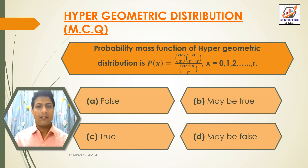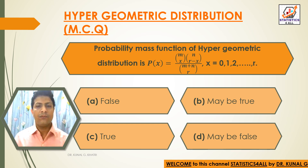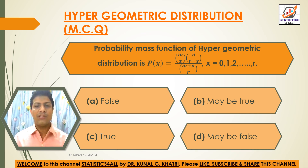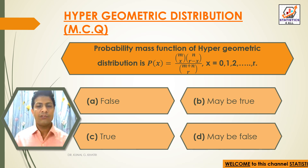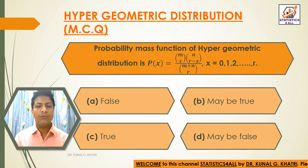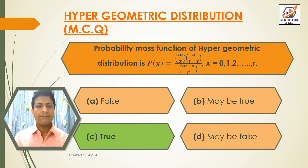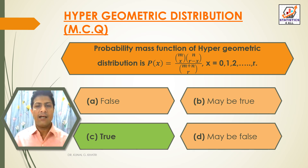Next question: The probability mass function of Hypergeometric distribution is P(x) = (mCx × nCr−x) / (m+nCr), where x = 0, 1, 2, 3 up to r. Option A: False, Option B: May Be True, Option C: True, Option D: May Be False. The answer is Option C — True.